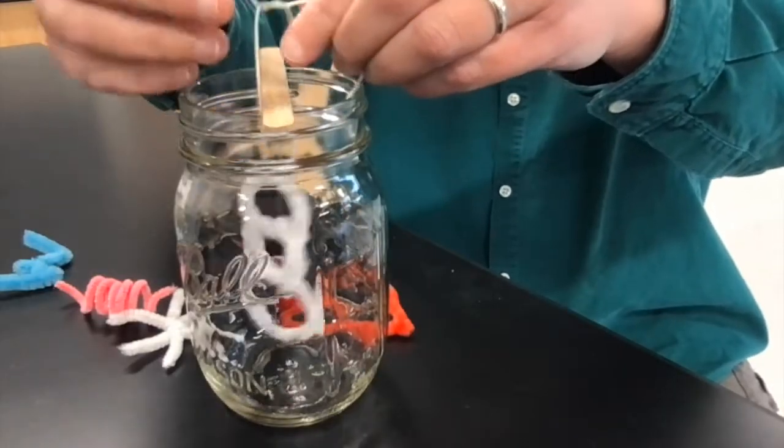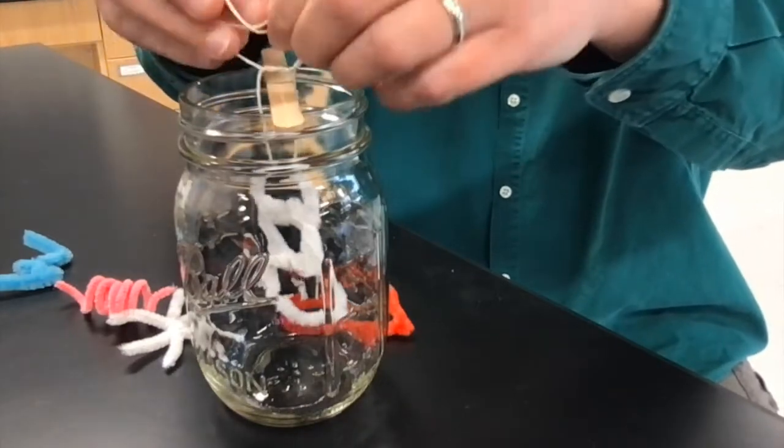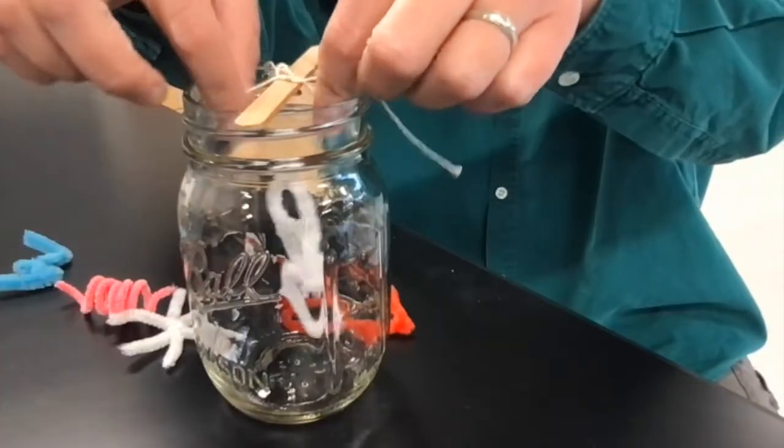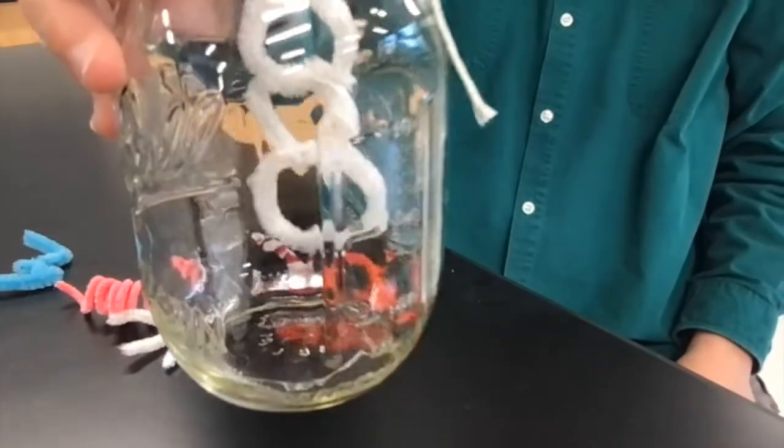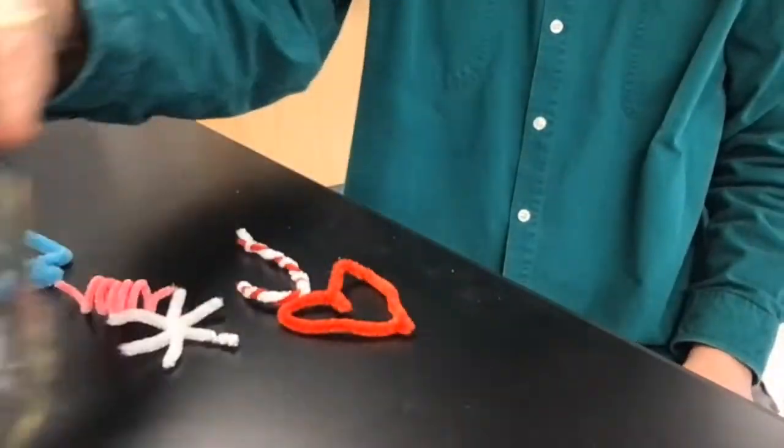So this is a good size ornament. I'm going to tie it right about here, maybe a little bit lower. I think I went too low. So that it dangles in the jar, again, without touching the bottom or the sides.